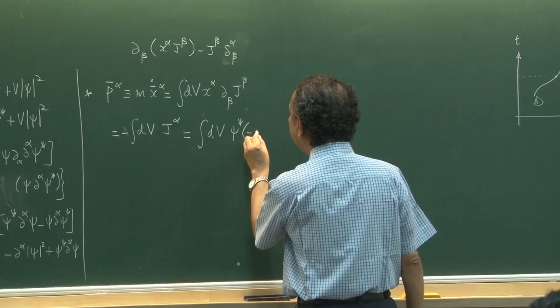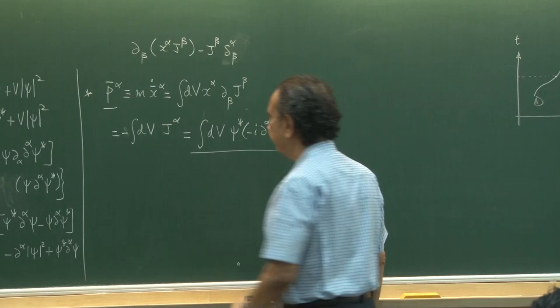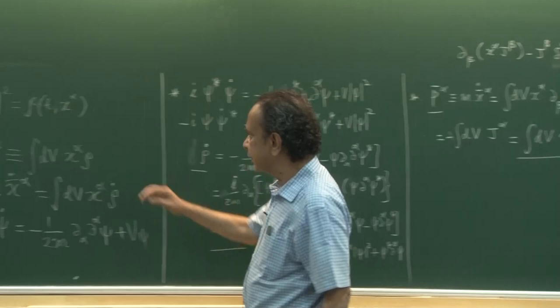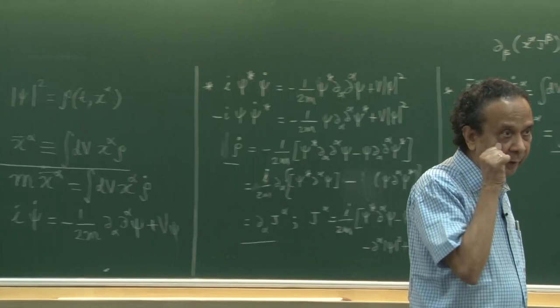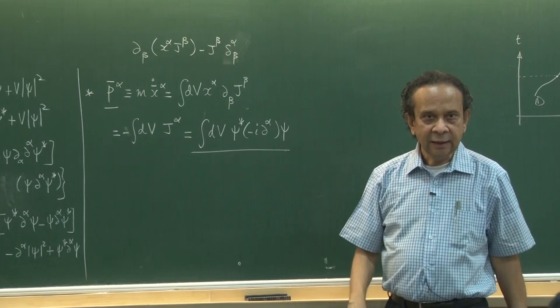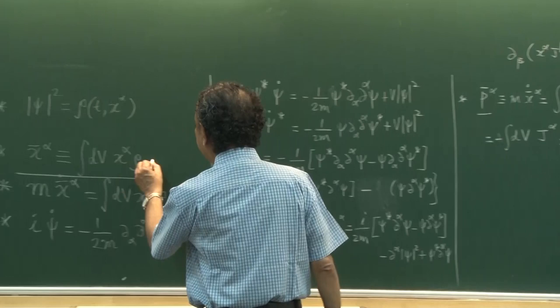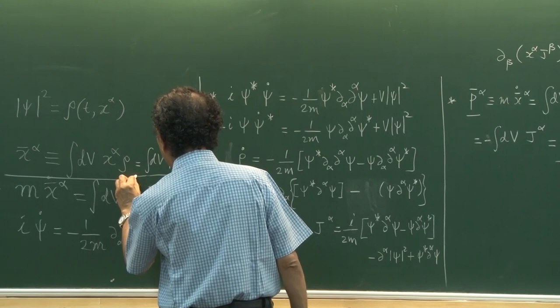This is the key result you should take home. Starting from the average position x̄^α = ∫ dV ψ* x^α ψ and taking a time derivative, we find the mean momentum is p̄^α = ∫ dV ψ* (−i ∂_α) ψ. You can also write the mean position as ∫ dV ψ* x^α ψ, so an interesting pattern emerges: the mean value of x is given by x^α sitting between ψ* and ψ, and the mean value of momentum by the operator −i∂_α sitting between ψ* and ψ.